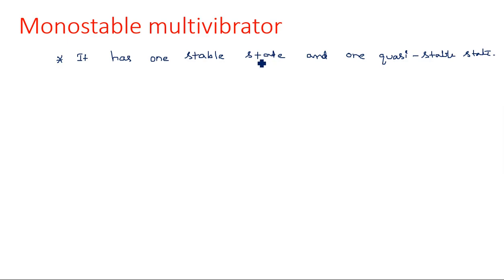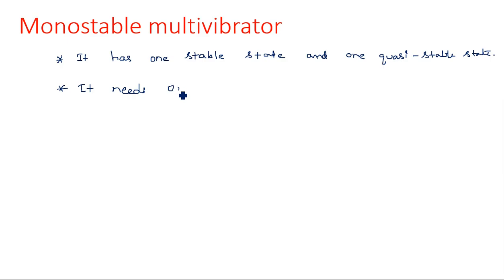The stable state is a permanent state — until you apply a triggering pulse, this particular state will not change. The quasi-stable state is a temporary stable state; even if you don't give a triggering pulse, the state will automatically turn back into the original stable state. So the monostable multivibrator has one stable state and one quasi-stable state, and it needs one triggering pulse to change states.